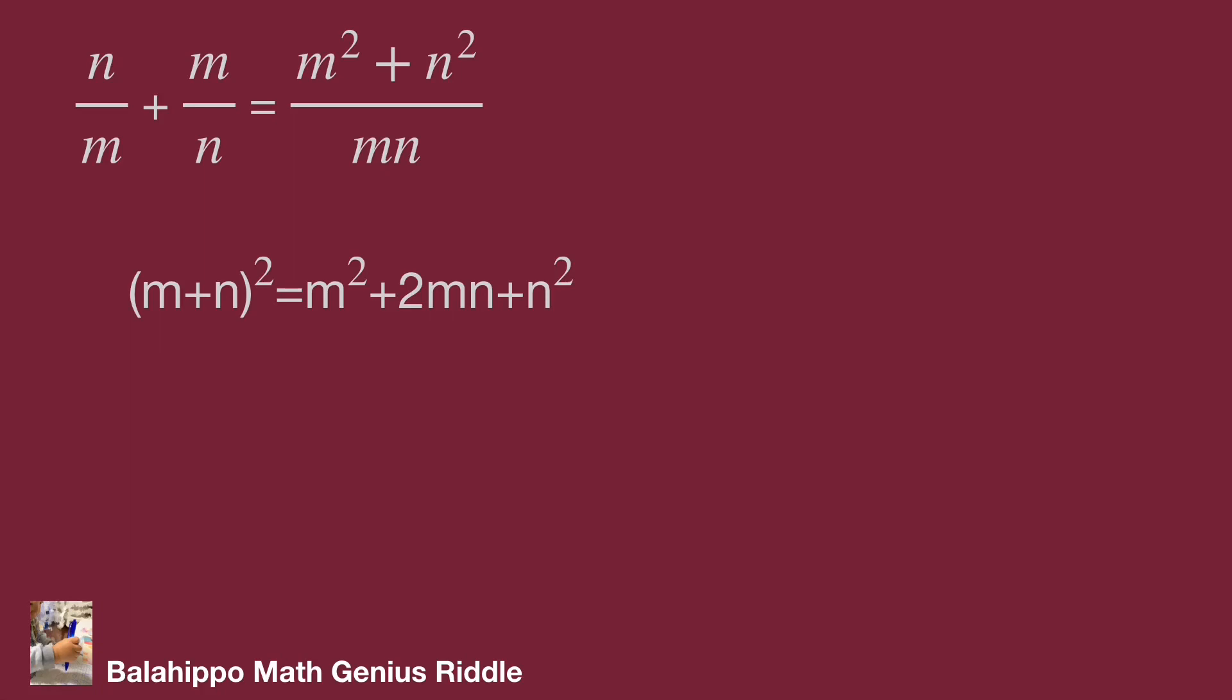We know the quantity m plus n squared formula. Adjust to quantity m plus n squared minus 2mn equal to m squared plus n squared. Substitute m squared plus n squared by quantity m plus n squared minus 2mn into the equation.